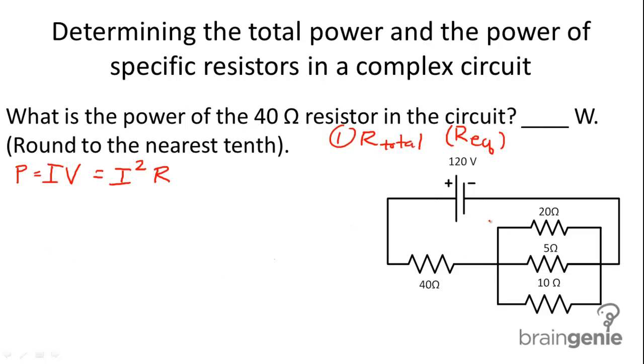So the equivalent resistance of this section here, which we'll call our REQ, we're going to find that using this equation. 1 over REQ equals 1 over 20 plus 1 over 5 plus 1 over 10. We get an REQ value of 2.86 ohms.